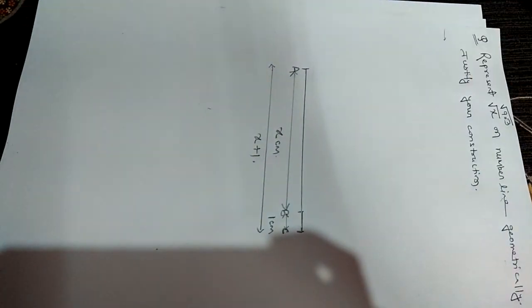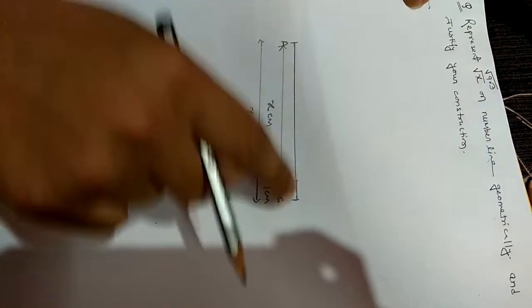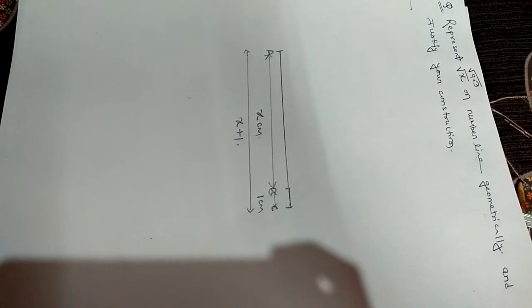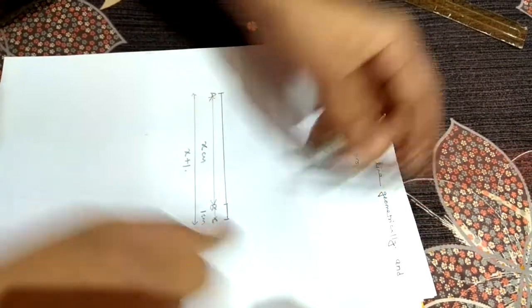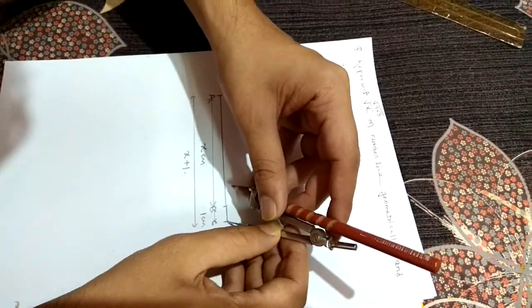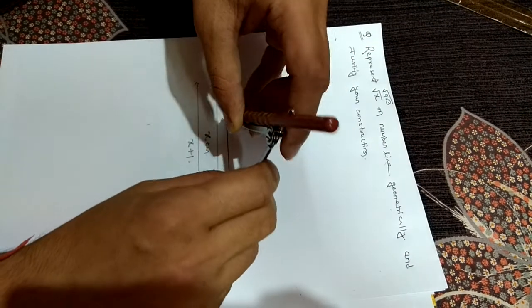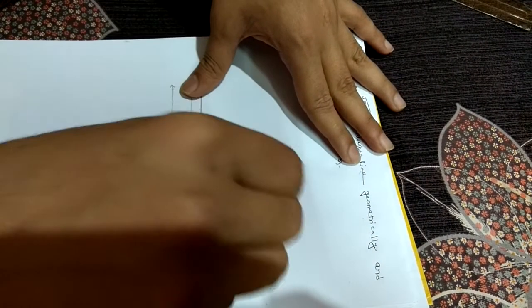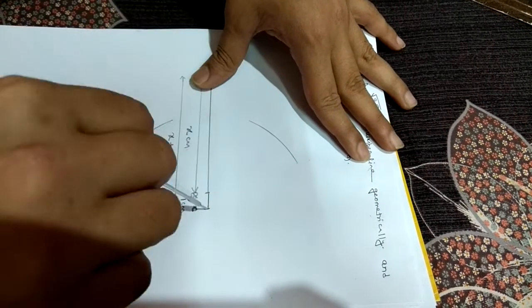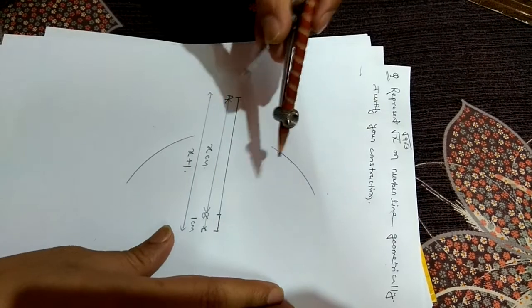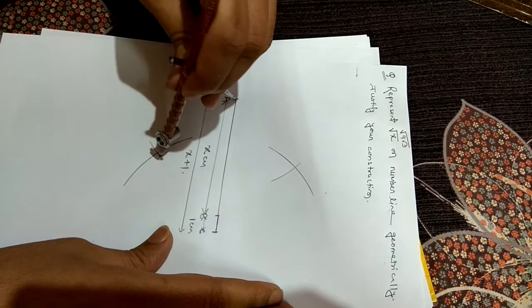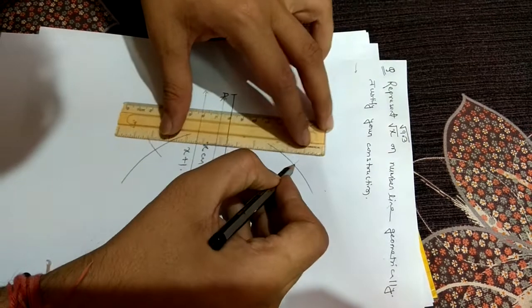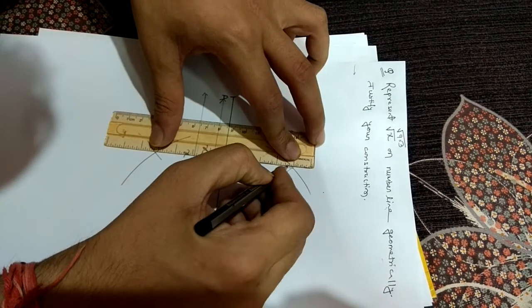Now the length of AC is going to be bisected. What we need to do with the compass? Take C point and end point, more than half, without disturbing it put it on A, and finally we have to join this. AC midpoint suppose D mark.